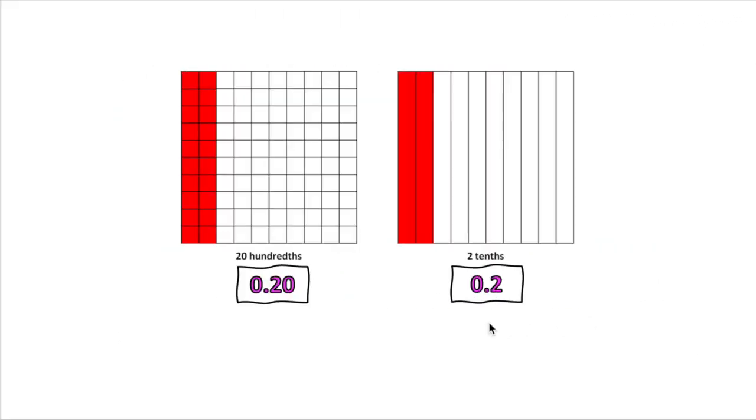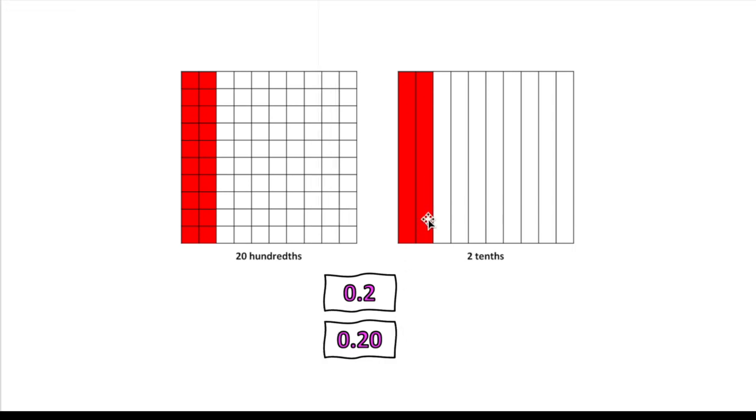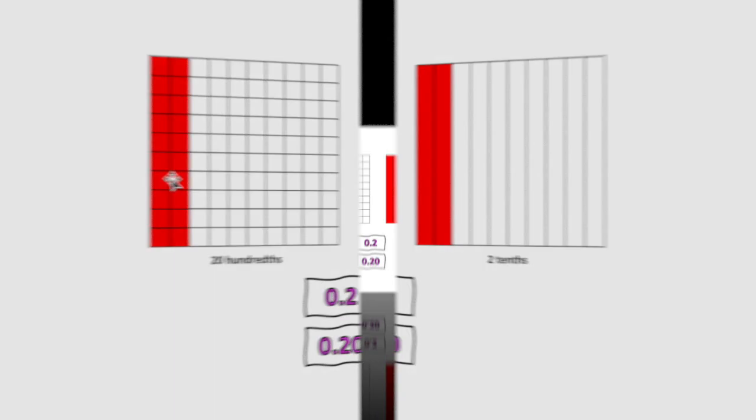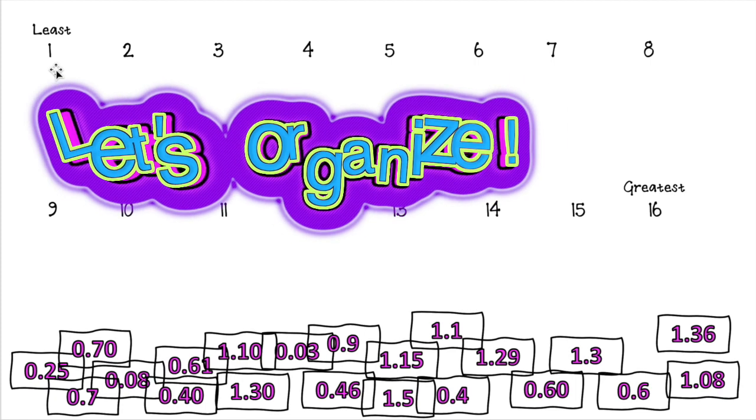This model, which is equivalent if you compare these two, are the same, but the models are different. We have 2 tenths. In decimal number, you write 2 tenths as 0.2. Before we move on, it's very important that you know that 2 tenths is equivalent to 20 hundredths.